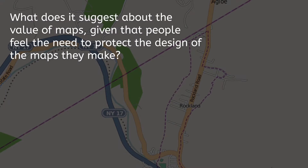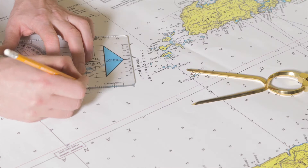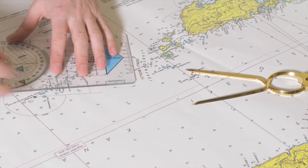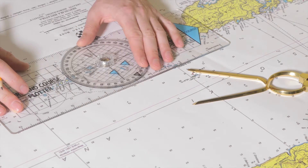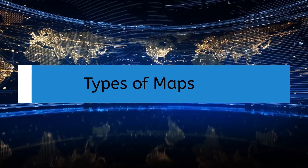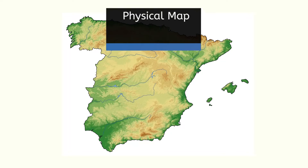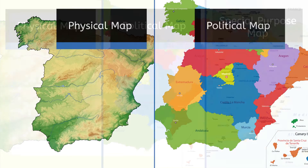What does it suggest about the value of maps, given that people feel the need to protect the design of the maps they make? Cartographers have to work pretty hard to create these maps in the first place. A lot of time goes into making them, and they are incredibly useful to the people that use them. Of course they're valuable! Most maps fall into three basic categories: physical, political, and special purpose.